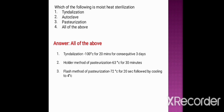The holder method of pasteurization is done at 63 degrees centigrade for 30 minutes, whereas the flash method is done at 72 degrees centigrade for 20 seconds, followed by cooling to 4 degrees centigrade. Autoclave is run at 121 degrees centigrade for 15 to 20 minutes at 15 psi (pounds per square inch). At 121 degrees centigrade for 15 minutes at 15 psi, it is not sufficient to kill or inactivate prions, but at 134 degrees centigrade for 18 minutes or above, it is enough to inactivate prions.